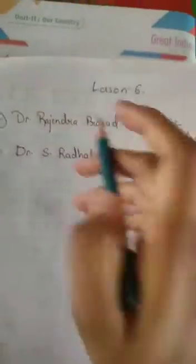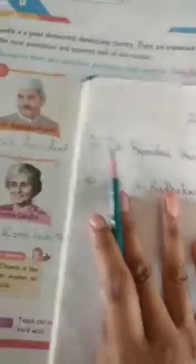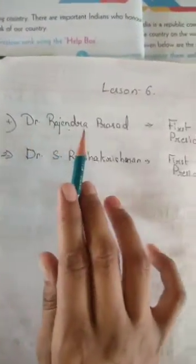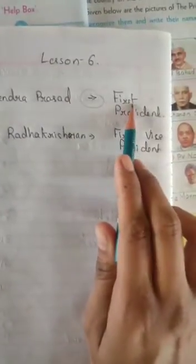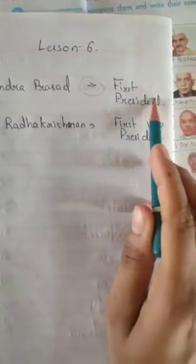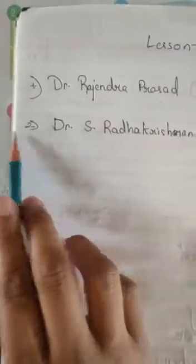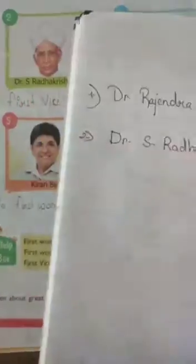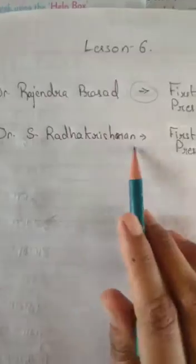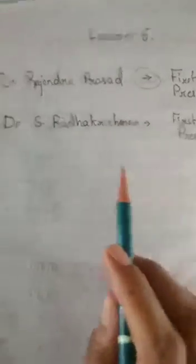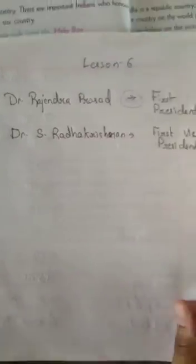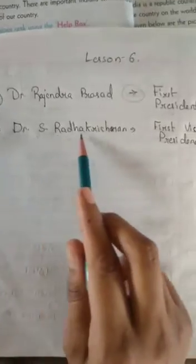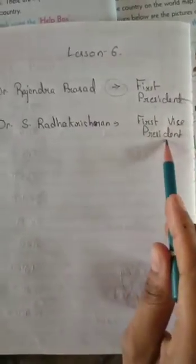Children, let's see how to do this in the copy. For lesson six, write the name — for example, Dr. Rajendra Prasad — draw an arrow — he was the first President. Similarly, Dr. S. Radhakrishnan — draw an arrow — he was the first Vice President.